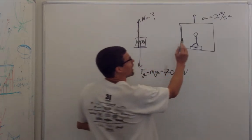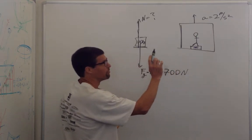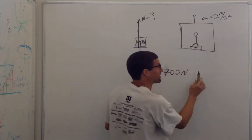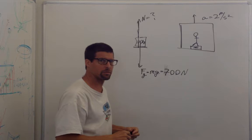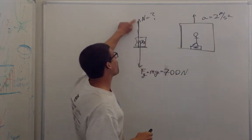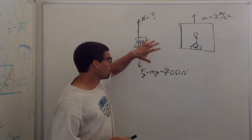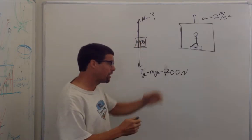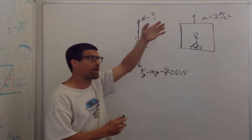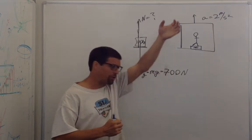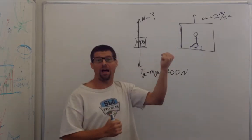I could be going up at a constant speed or down at a constant speed or at rest. But I know I'm accelerating upwards. I could be going down right now, but I'm accelerating upwards. Because when you're dropping something, if you want to stop it, you have to pull harder on it.